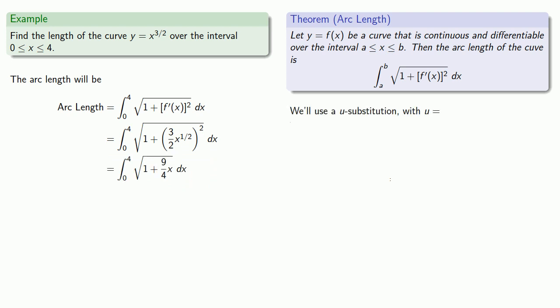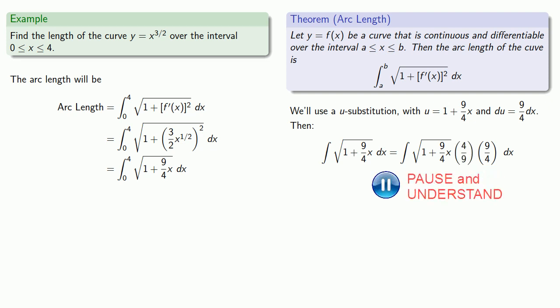To evaluate this, we'll use a u substitution. We'll try u equals 1 plus 9/4 x. And so du will be 9/4 dx. We need a 9/4 dx. So we'll put it in as long as we take it out by multiplying by 4/9. Making our u substitutions.